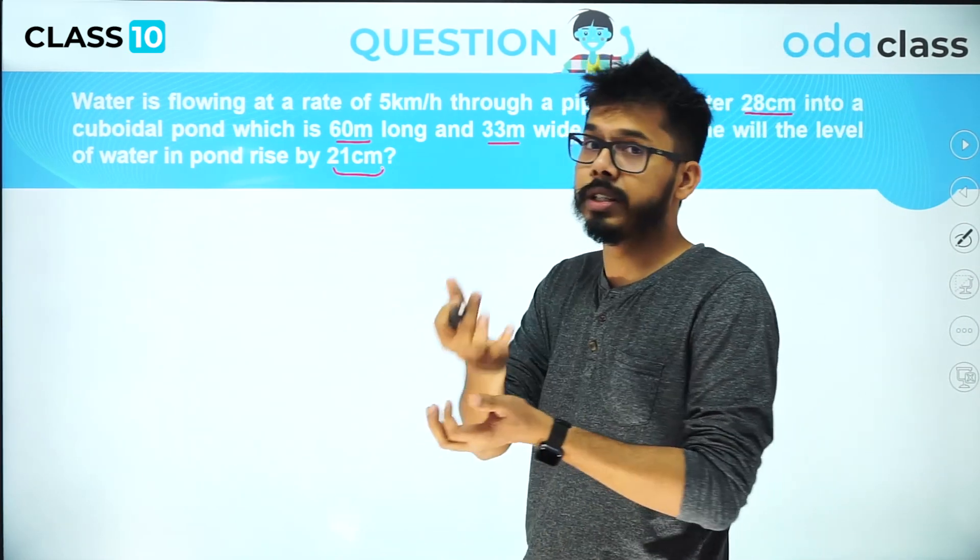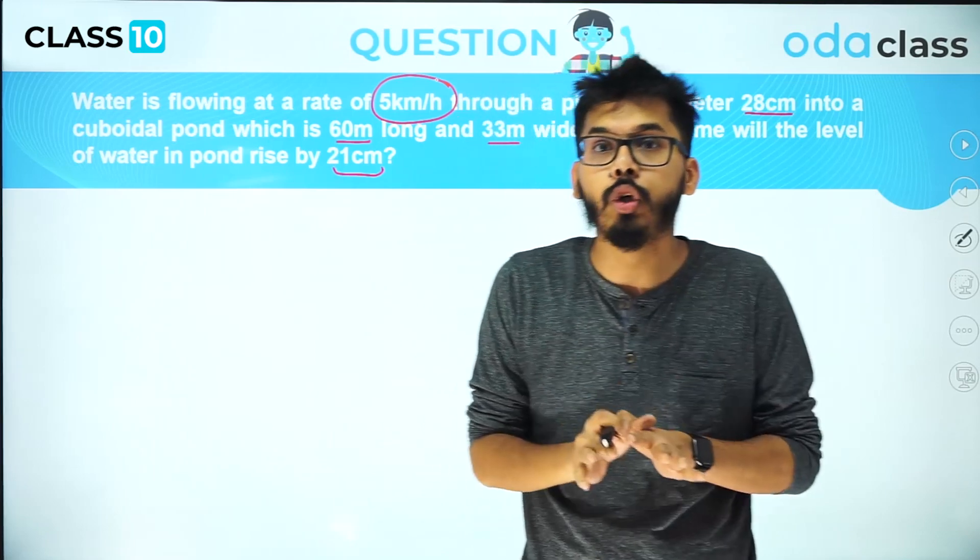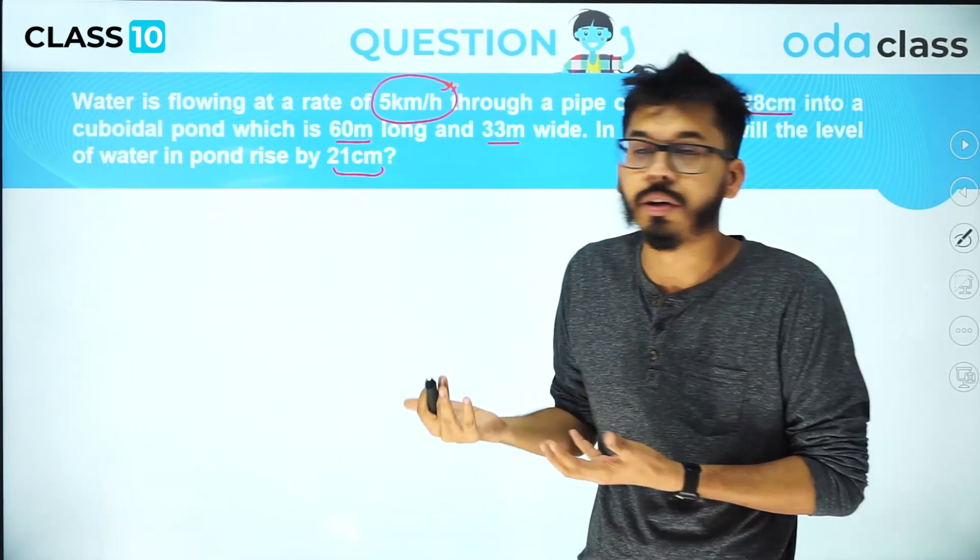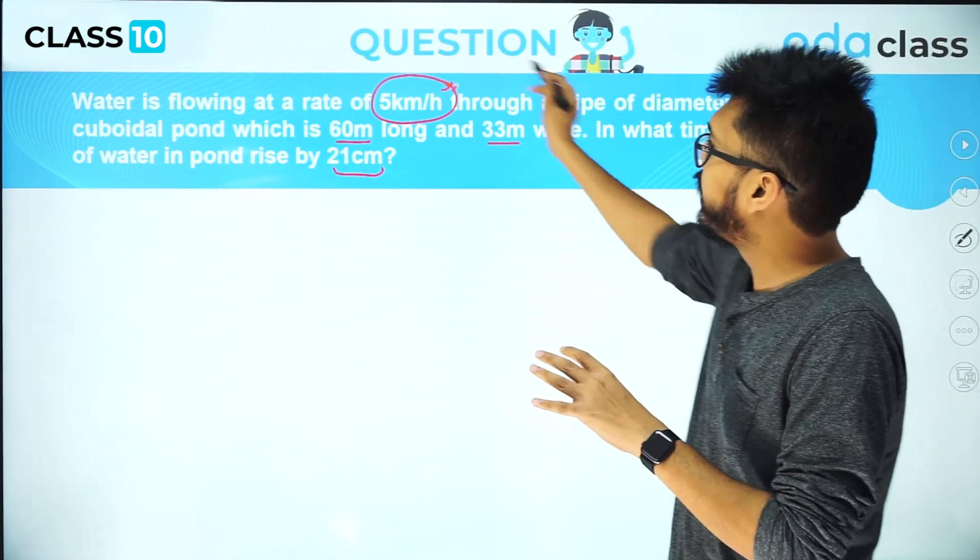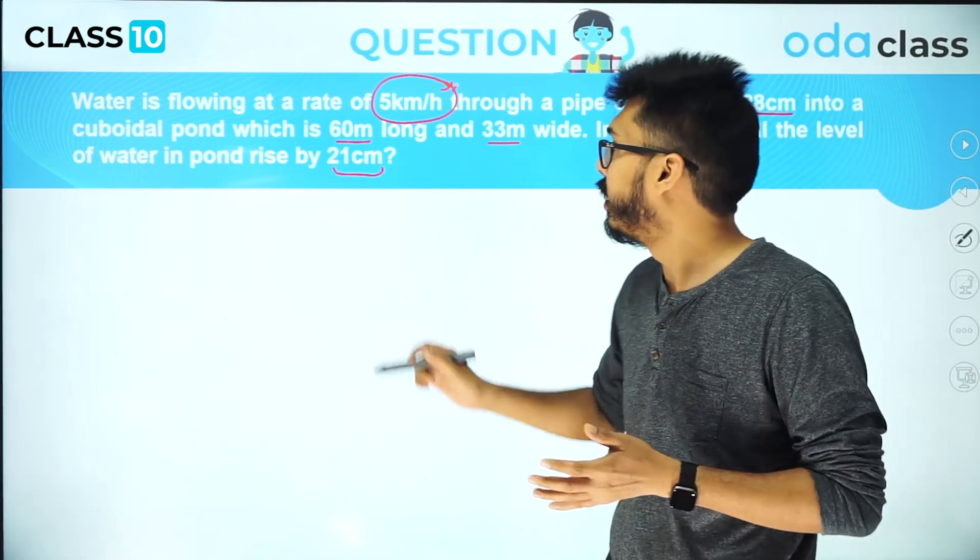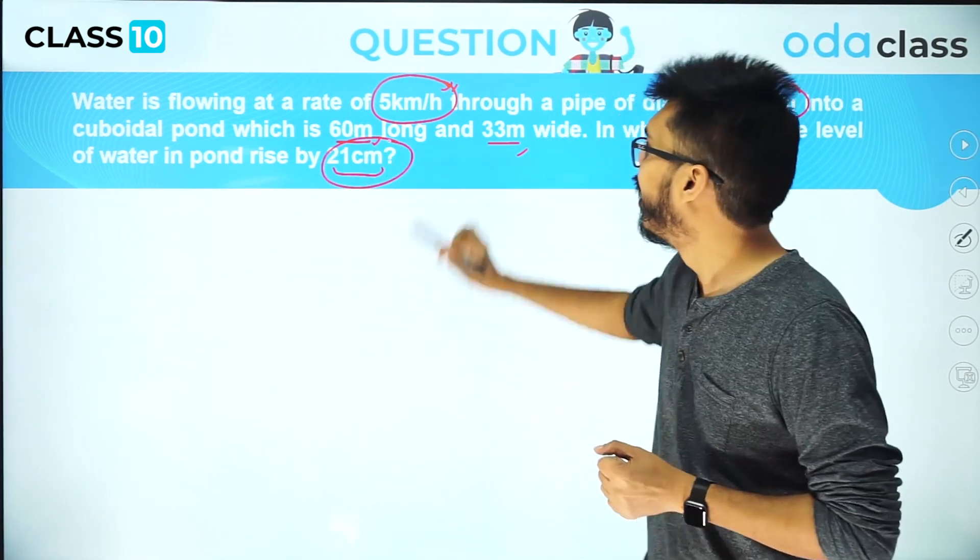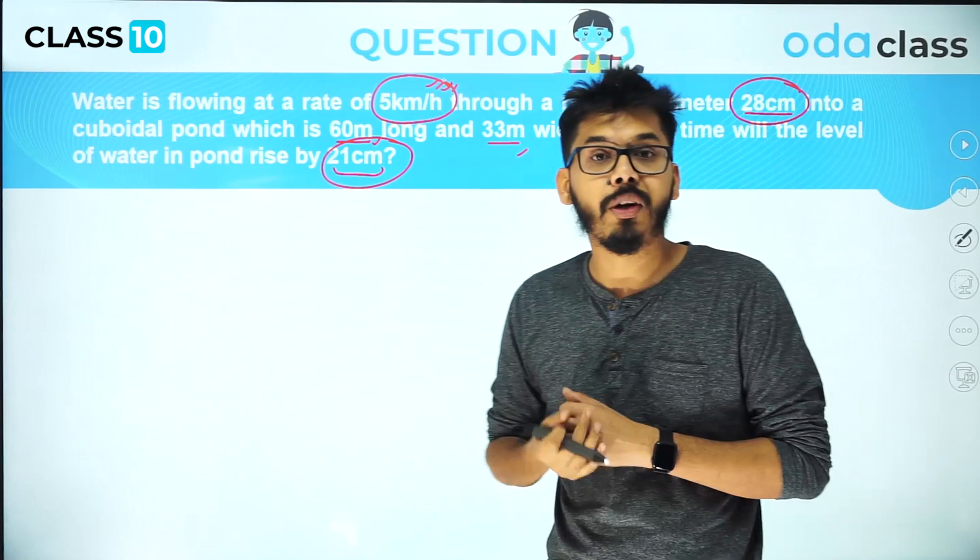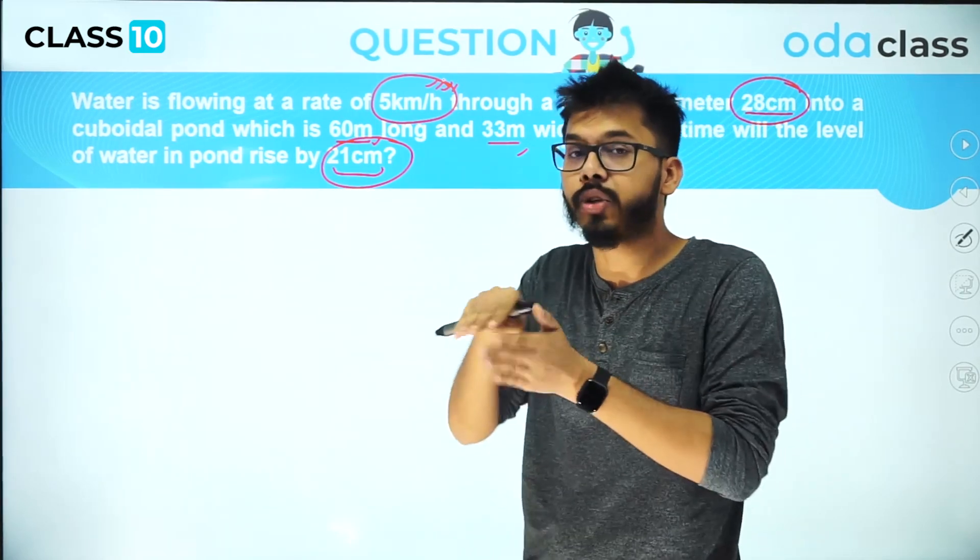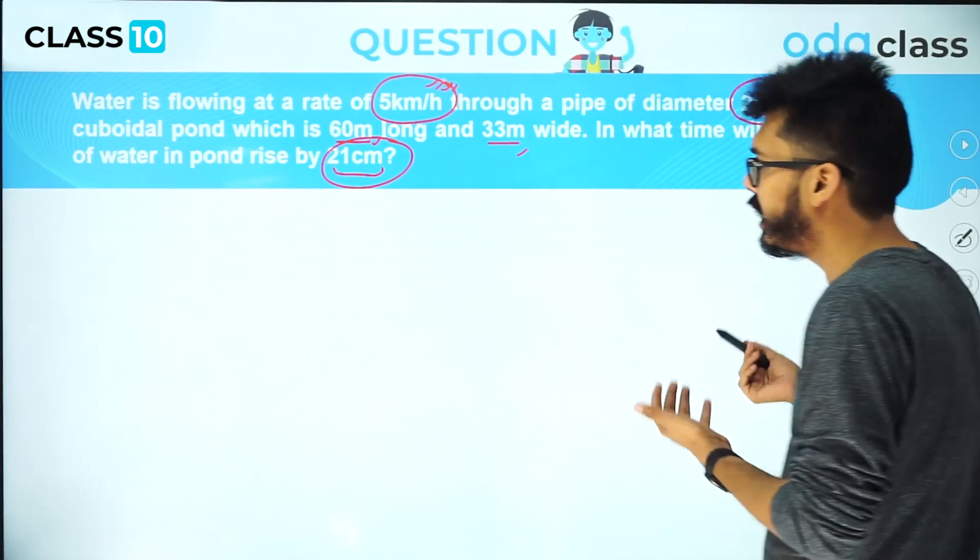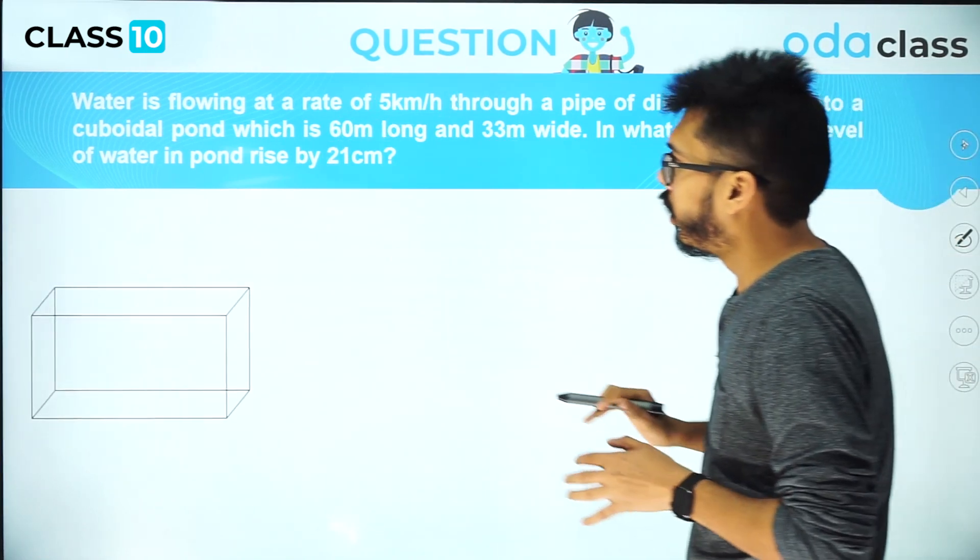This problem is tricky in two ways. One, the water is coming at a particular rate and the rate is not directly given in terms of volume, it's given in terms of meter or kilometer. Second, all these things are not represented in the same unit. If you notice, this is in meter, this is in meter, but these two are in centimeter, and here you have rate in terms of kilometer per hour. You have to simplify and work on these data in the same unit and then proceed with the problem.